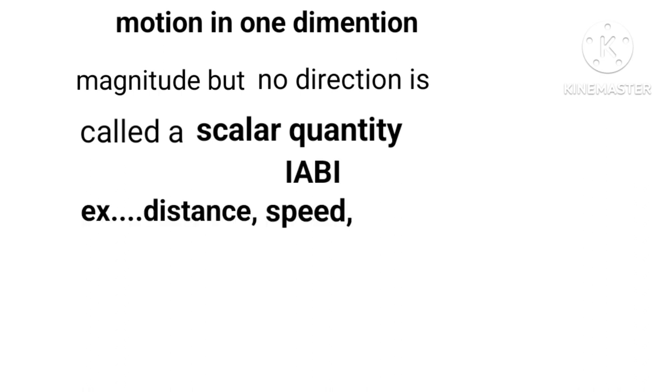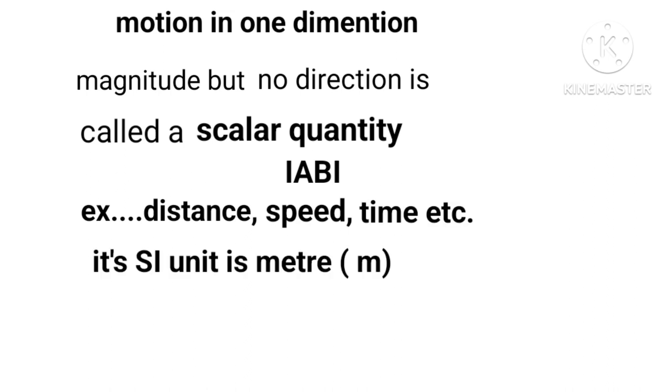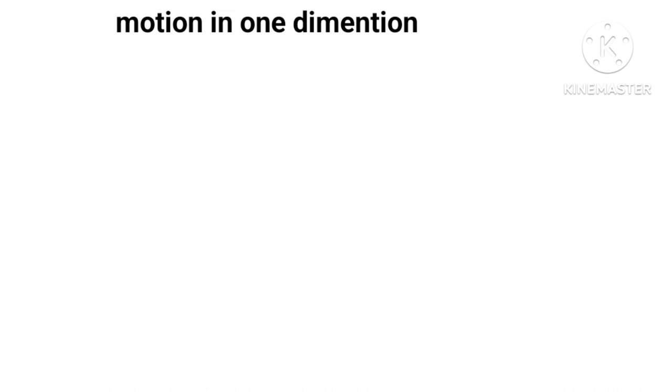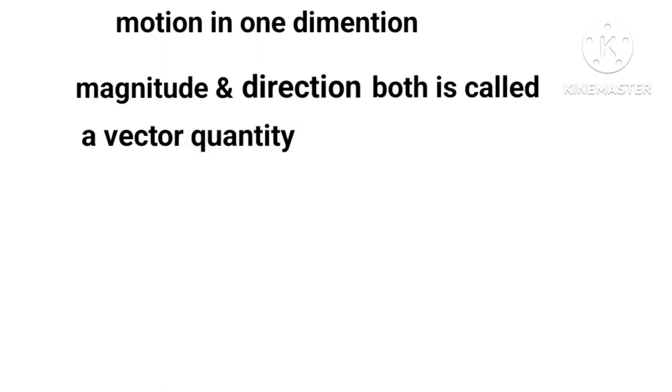Distance, speed, time, etc. Its SI unit is meter. A physical quantity that has both magnitude and direction is called a vector quantity.